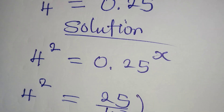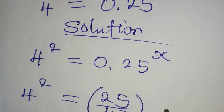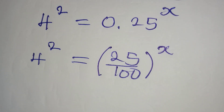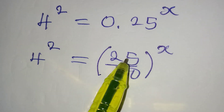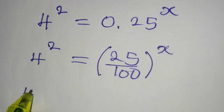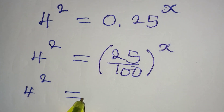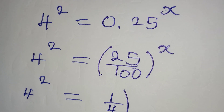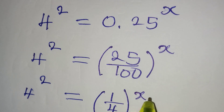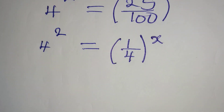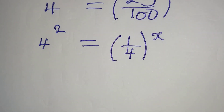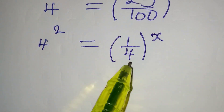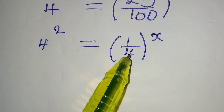This is raised to the power of x. Now we can reduce this to a lower term, so we have 4 to the power of 2 being equal to 1 over 4 to the power of x. Now, we write this in index form so that we can work with the powers.